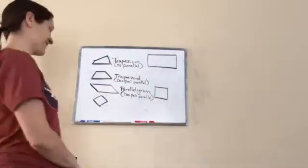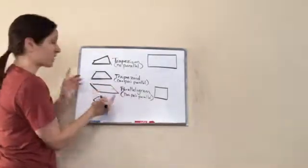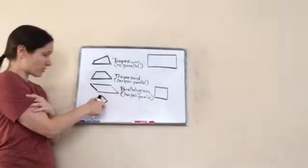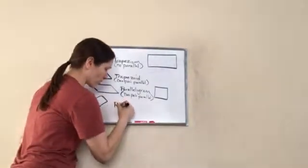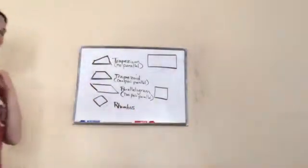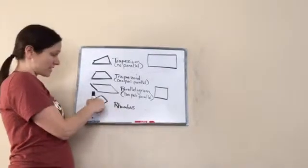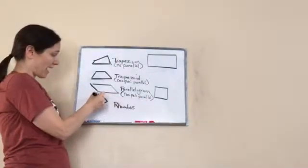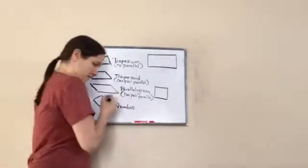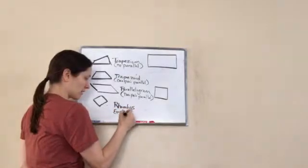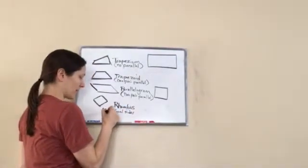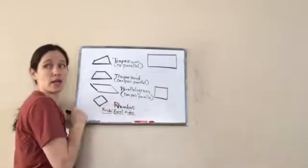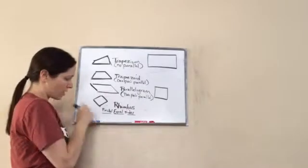It's a diamond shape, yes, but they call it something else in math. Do you notice that they're parallel? But guess what else — all the sides are equal. This one's the same size as this one, same size as this one, same size as this one. It starts with an R and it's called a rhombus. A rhombus has two pairs of parallel sides, but they also have equal side lengths. So it's a parallelogram with equal sides — write that down.